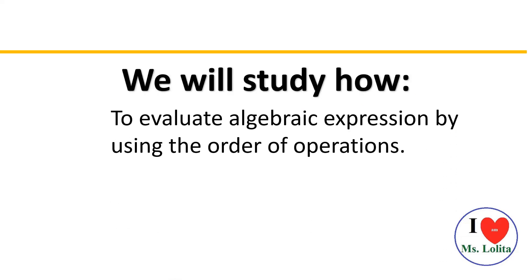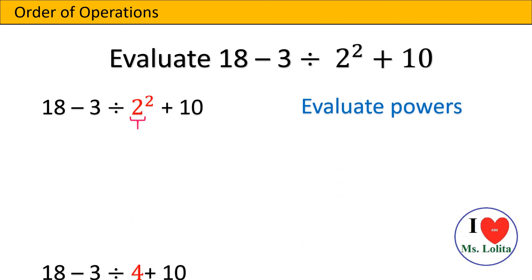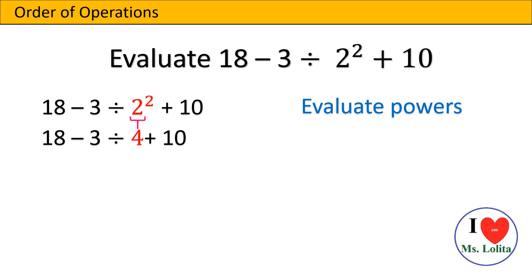Now let us study how to evaluate numeric expressions by using the order of operations. Let us work on this example: evaluate 18 minus 3 divided by 2 squared plus 10. Since there is no parenthesis in the given equation, we are going to evaluate the powers first. The power here is 2 squared, which will give us 4.